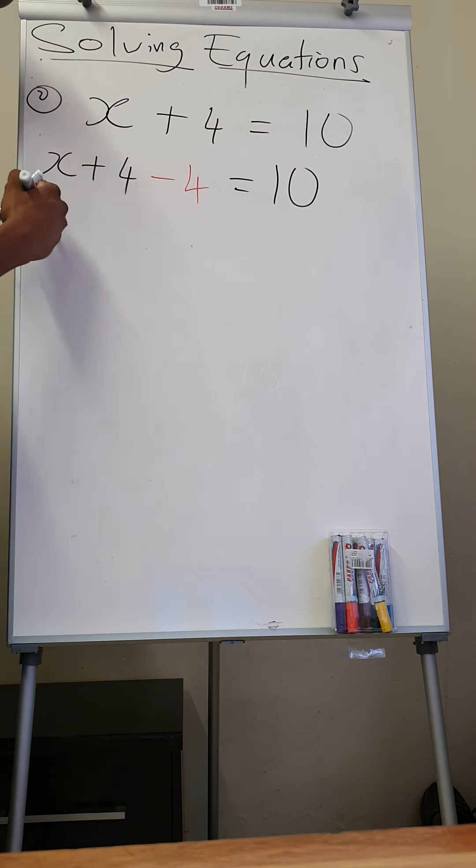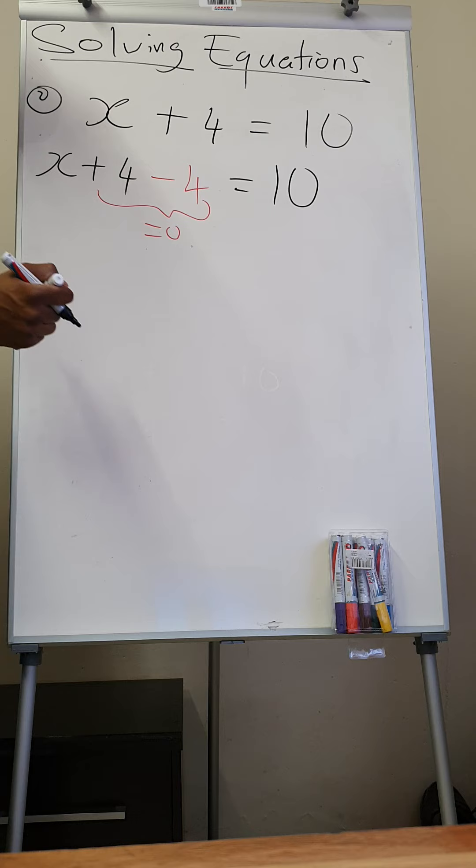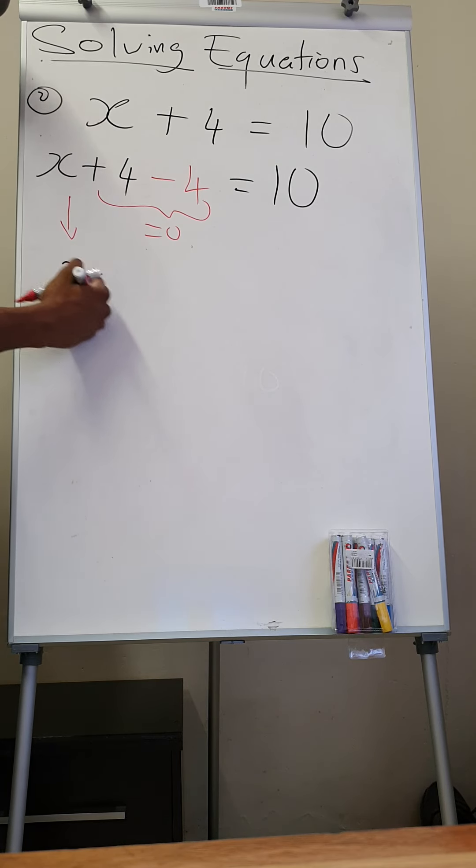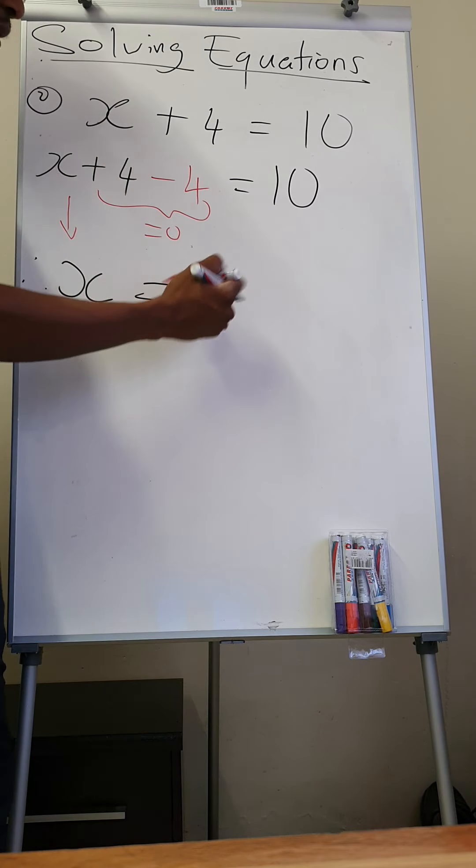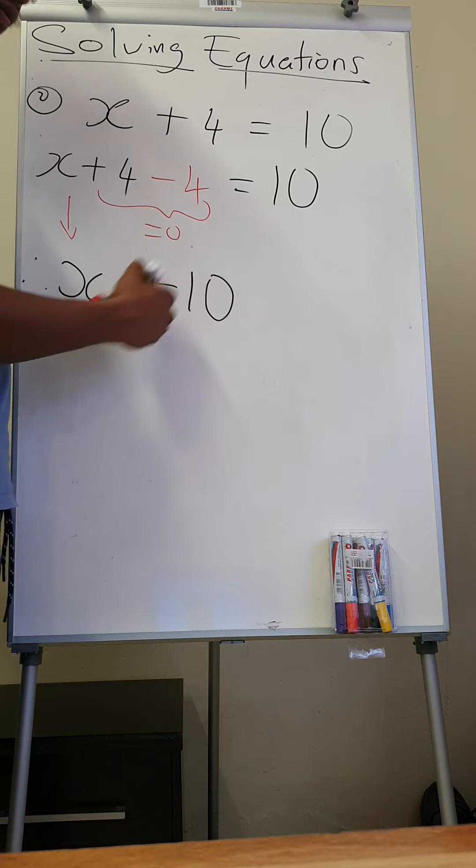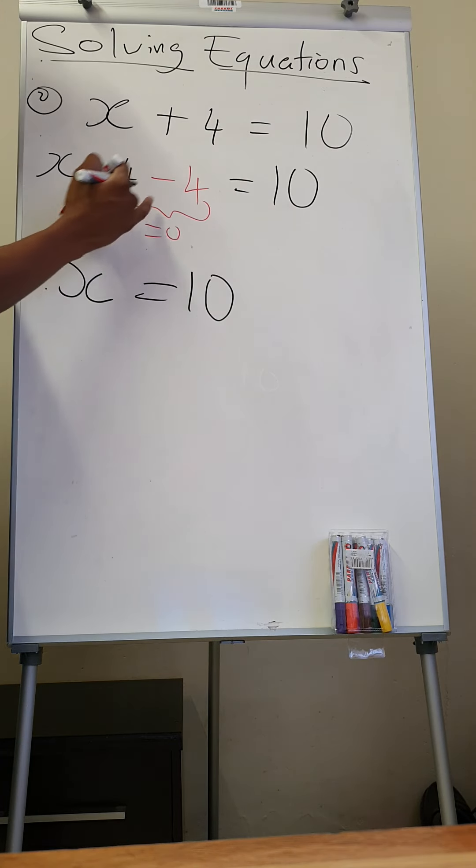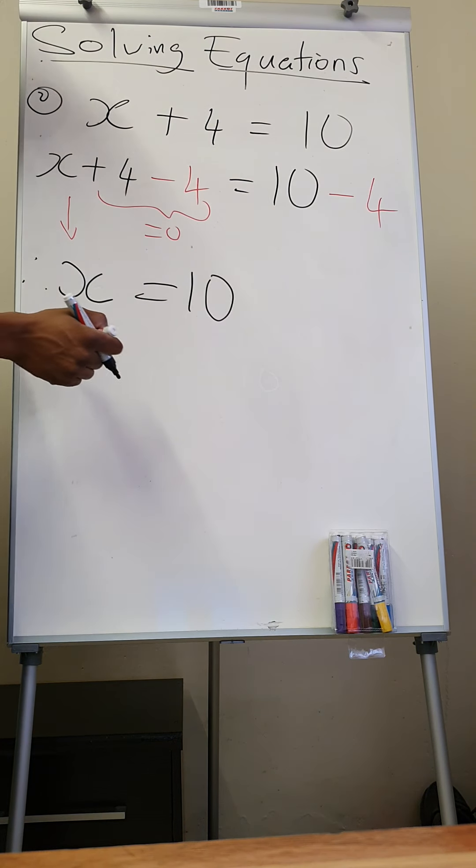So again, this part is going to be equal to 0 because it's plus 4 minus 4, which is 0. So when you drop x, you're going to have, therefore, x is equal to 10. Now you minus 4 this side, so it means you minus 4 that side as well. Don't forget that.